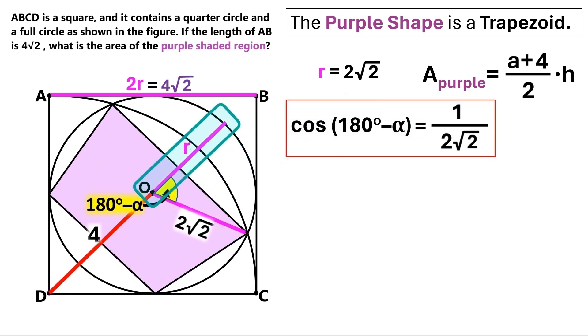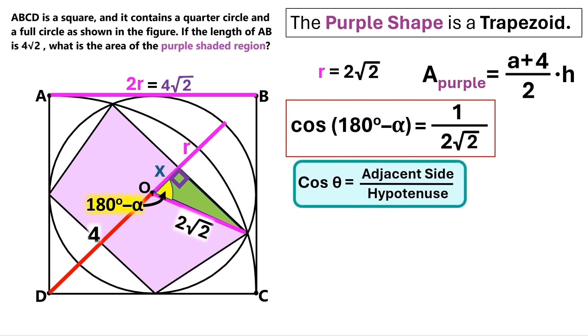Now we already know that this radius divides this chord into two equal parts. So this angle is a right angle. And we've got this green right triangle over here. Now let's call this side x. And we'll use the cosine function to find its length. The cosine of an angle equals the length of the adjacent side, divided by the length of the hypotenuse. That is the longest side of a right triangle.